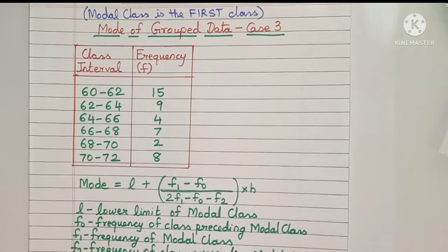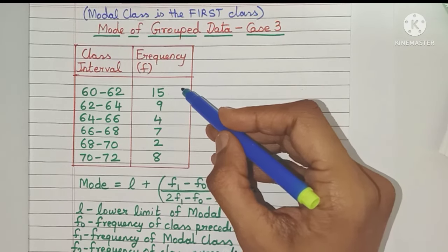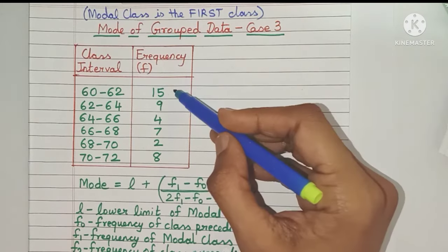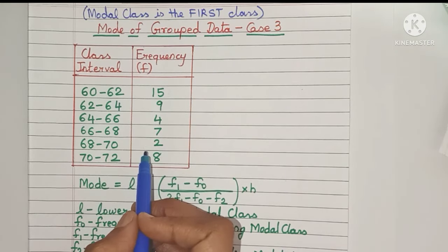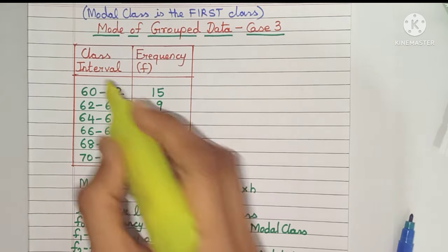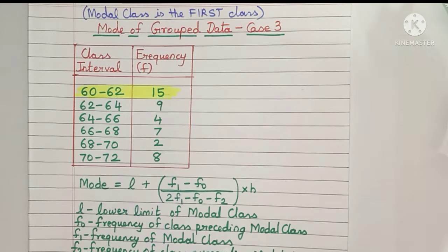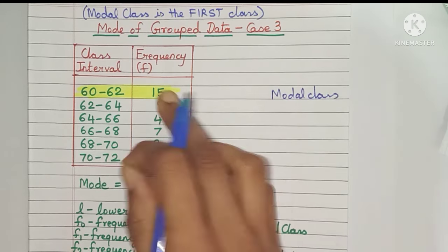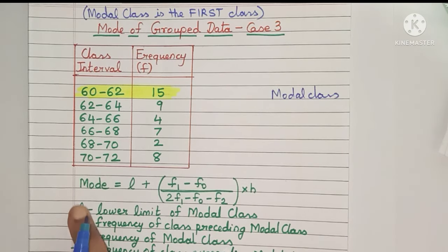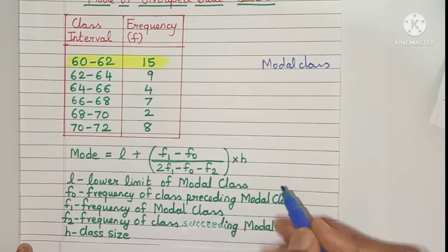Now let's come to the last case. Here again, let's first find the maximum frequency — as you can see, 15 is the highest value, so that is the maximum frequency, making this the modal class. Let's highlight it. As you can see, the modal class is the first class. L is the lower limit of the modal class, which is 60, so L = 60.